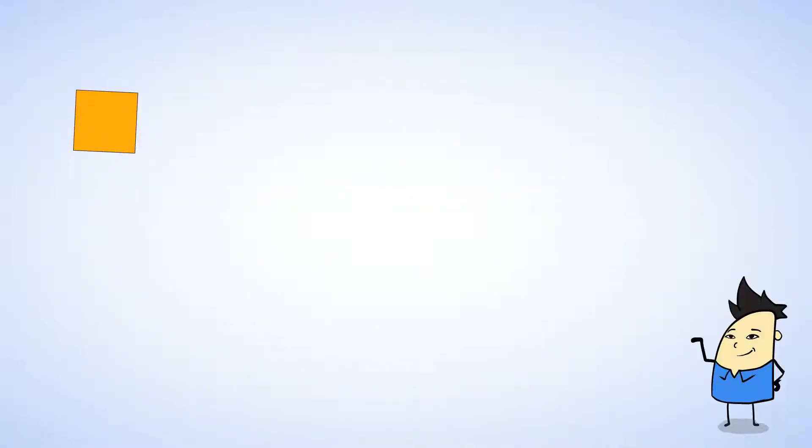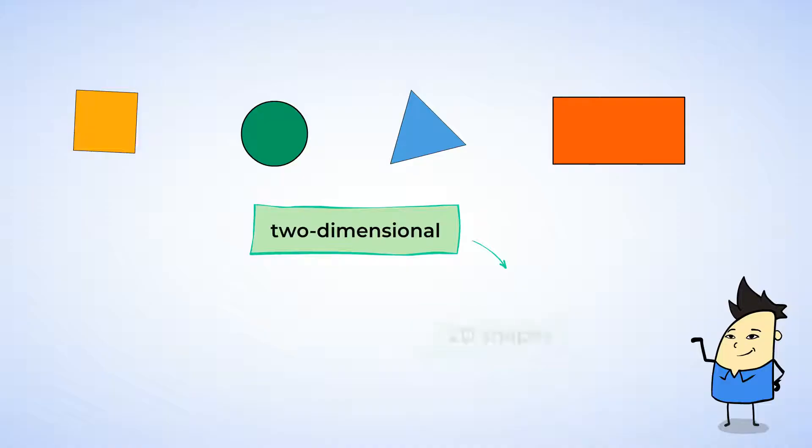These shapes, the square, circle, triangle, and rectangle, are all two-dimensional shapes, or 2D. And that means that they're flat. You can see the whole shape, no matter what.